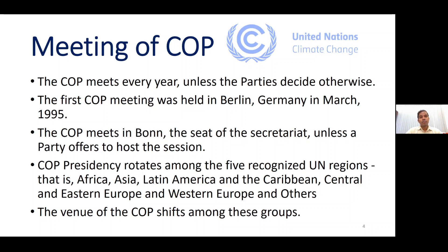COP meets every year unless the parties decide otherwise. The first COP meeting was held in Berlin, Germany in March 1995. Usually COP meets in Bonn, Germany, because the secretariat is located there. The COP presidency rotates among the five recognized UN regions: Africa, Asia, Latin America and the Caribbean, Central and East Europe, and West Europe and others. So the venue of the meeting shifts every year depending on who holds the presidency.